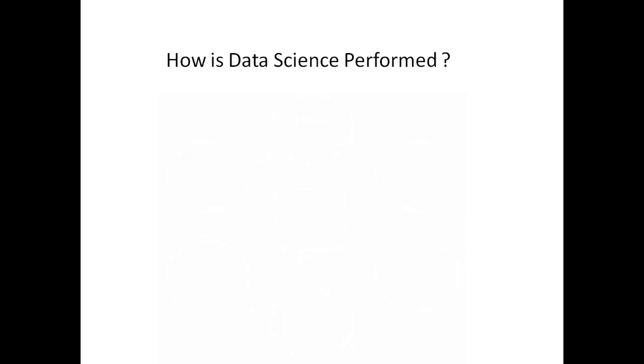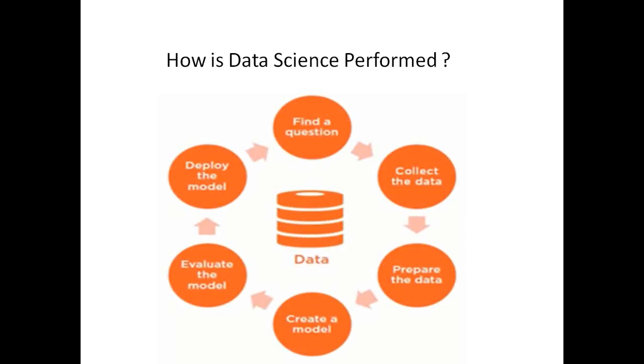The general data science process works like this. First, we find a question that we want to answer. This can be a hypothesis we want to test, a decision we want to make, or something we want to attempt to predict.